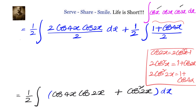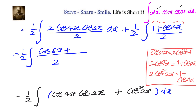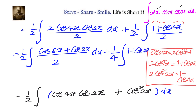In the next step we separate the integrals. Applying the product-to-sum formula to 2·cos 4x·cos 2x gives cos(4+2) + cos(4−2) = cos 6x + cos 2x. So we have one-half of the integral of (cos 6x + cos 2x) dx, plus one-quarter of the integral of (1 + cos 4x) dx.